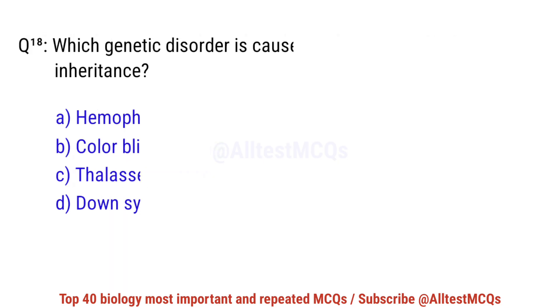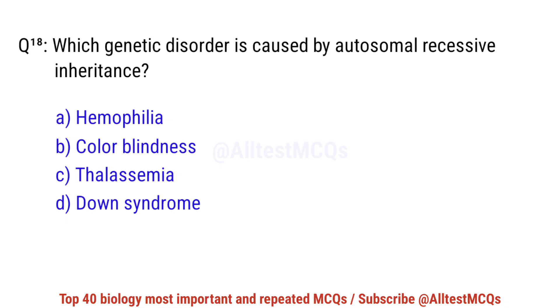Question number 18. Which genetic disorder is caused by autosomal recessive inheritance? The right option is C: Thalassemia.